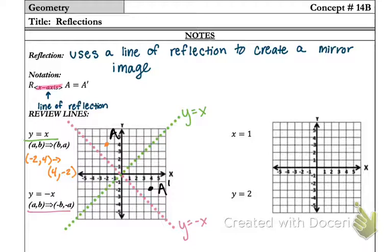Where if I have the line y equals negative x, my rule states that a, b becomes negative b, negative a. So you really need to pay attention to those negatives.